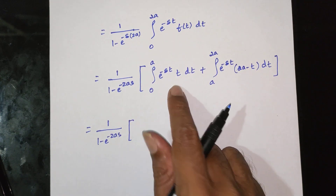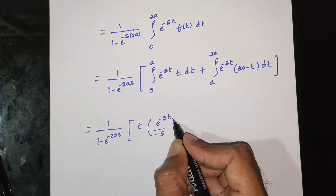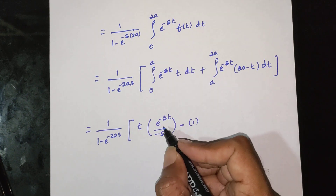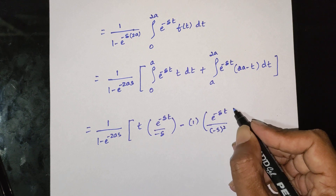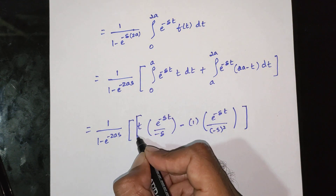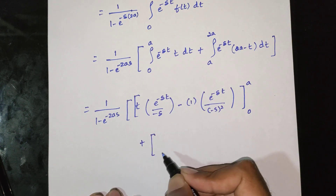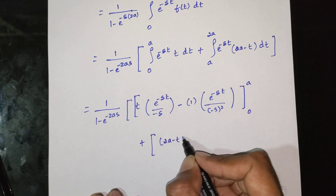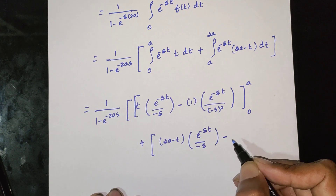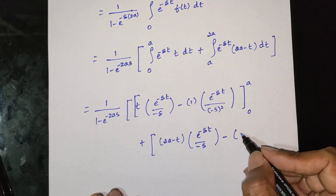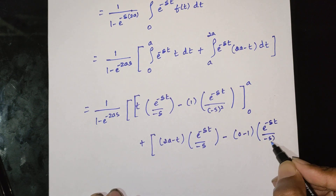Applying the UV rule (integration by parts): for the first integral, u equals t and dv equals e power minus st. Integrate e power minus st to get e power minus st by minus s; differentiate t to get 1, then integrate again to get e power minus st by minus s whole square. For the second integral, u equals (2a minus t), similarly integrate e power minus st by minus s, differentiate (2a minus t) to get minus 1, and integrate again to get e power minus st by minus s whole square.